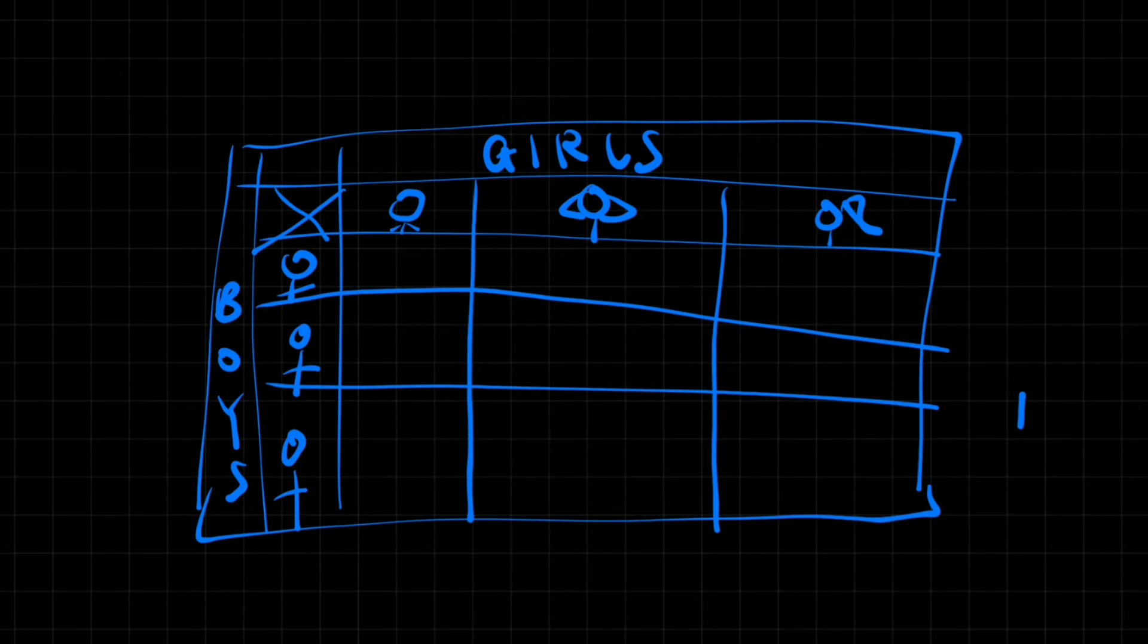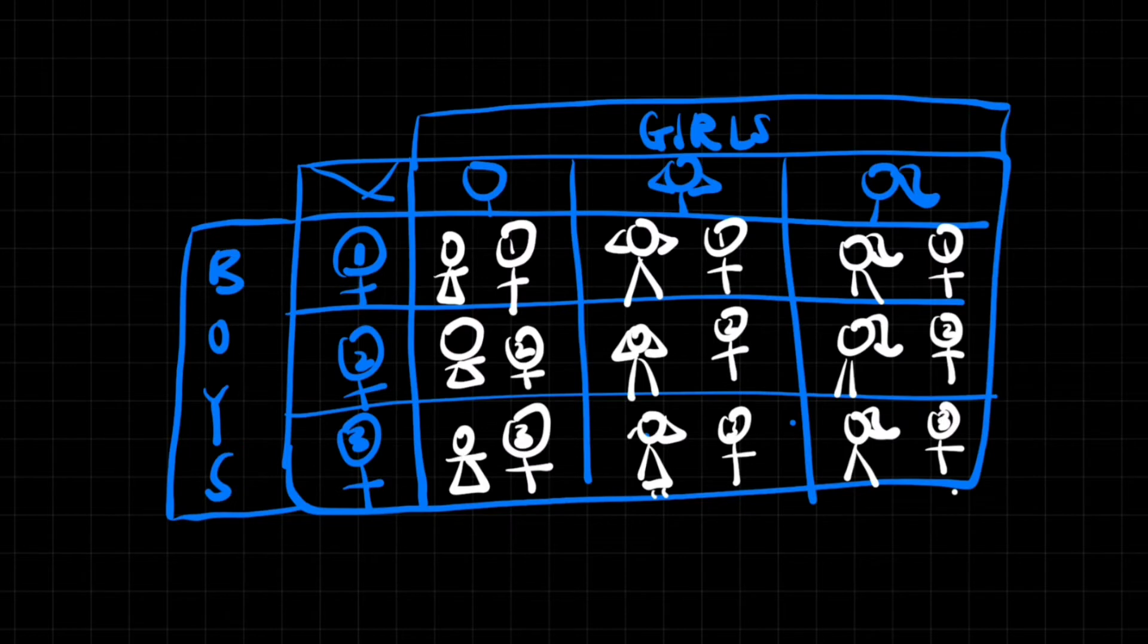Now, then we had all of these possibilities of each girl being with each guy, and it was tabulated, and it was perfect, because we could tell exactly which one was possible to happen. As you can see, in every single little box thing, there was one combination of a possible girl-boy couple.